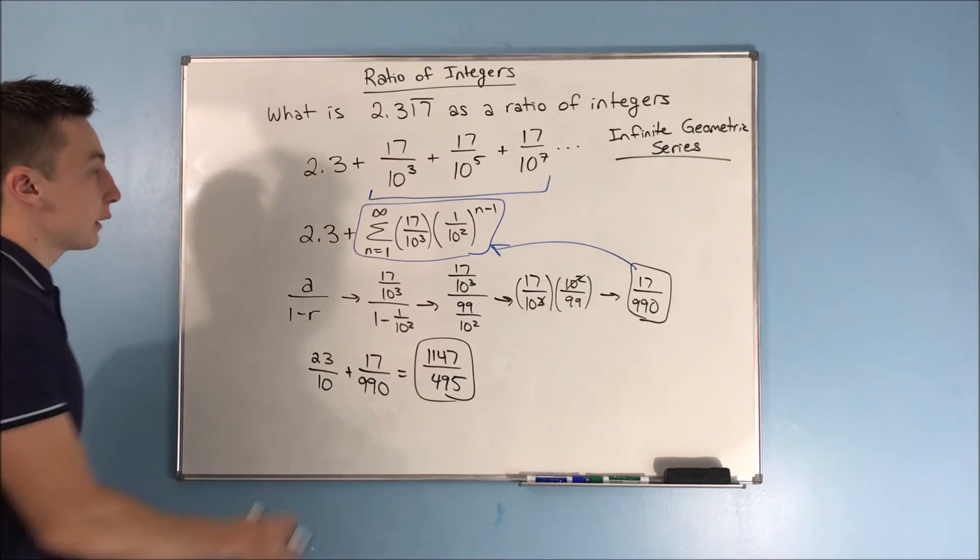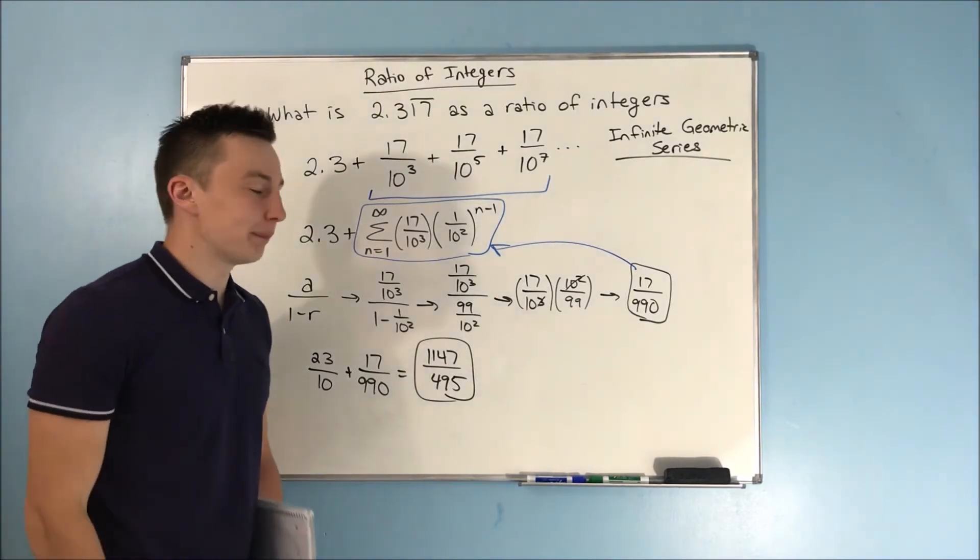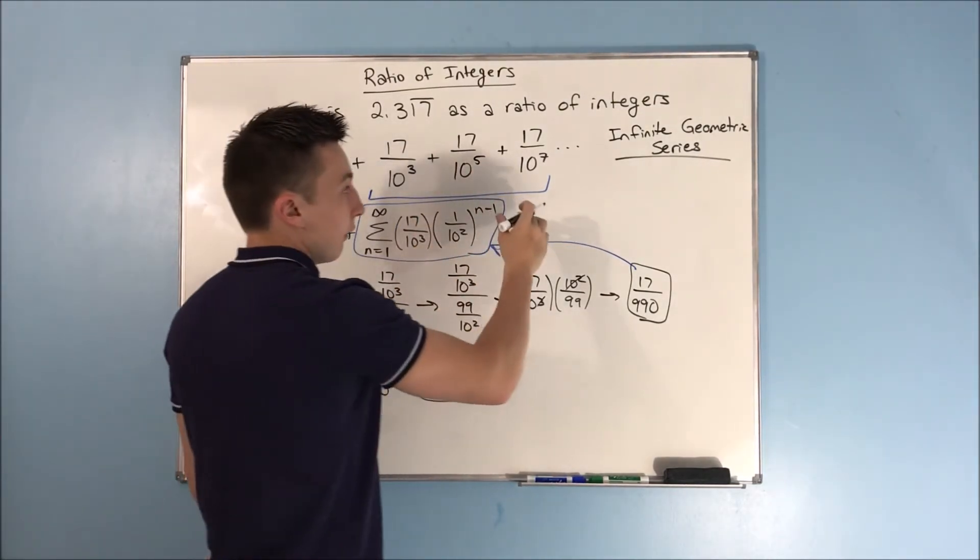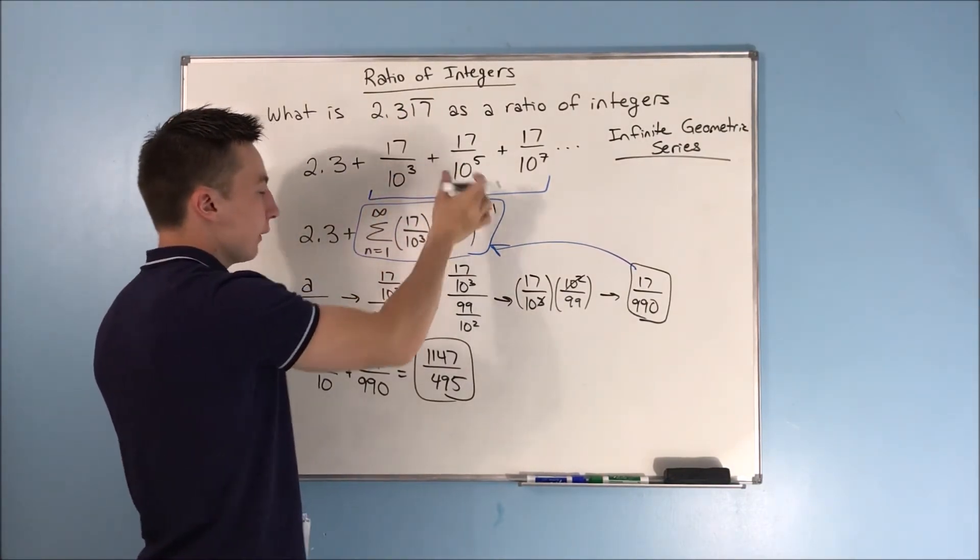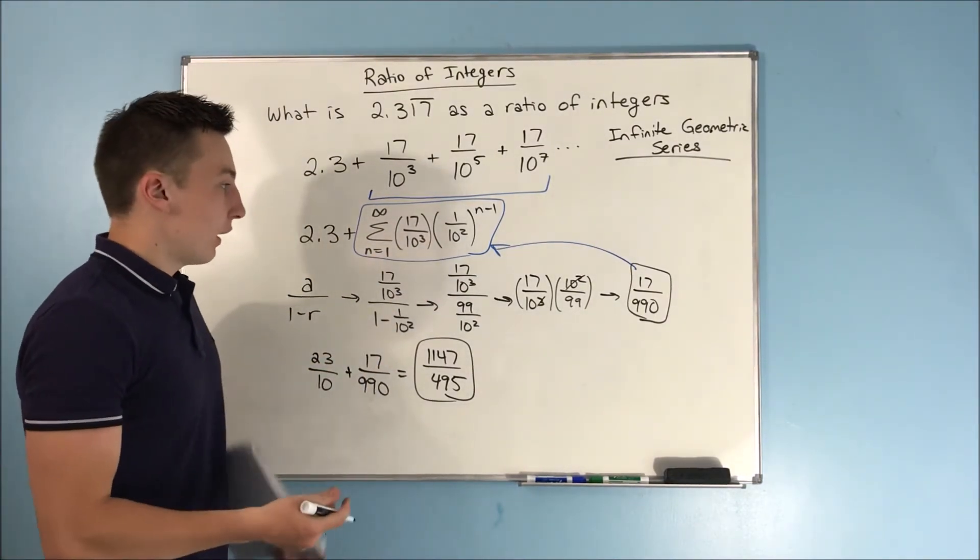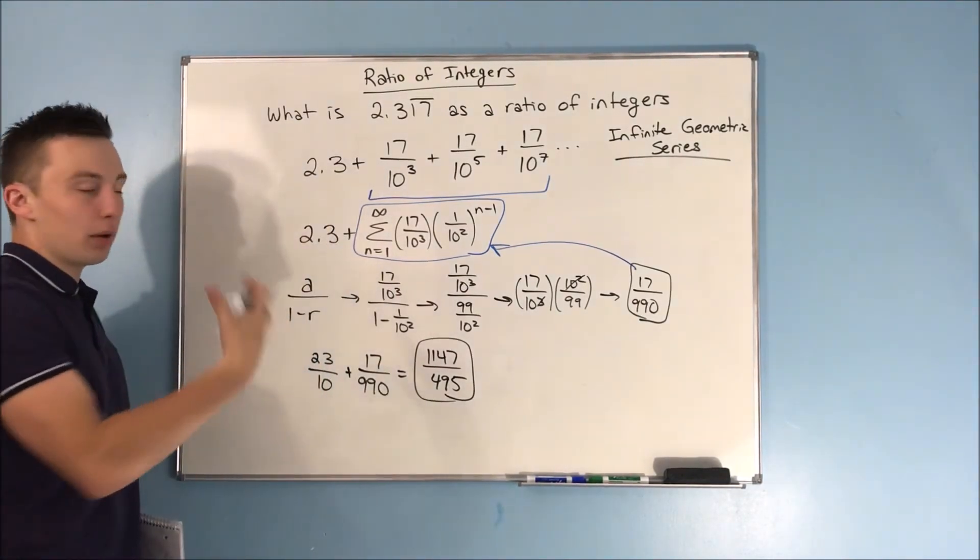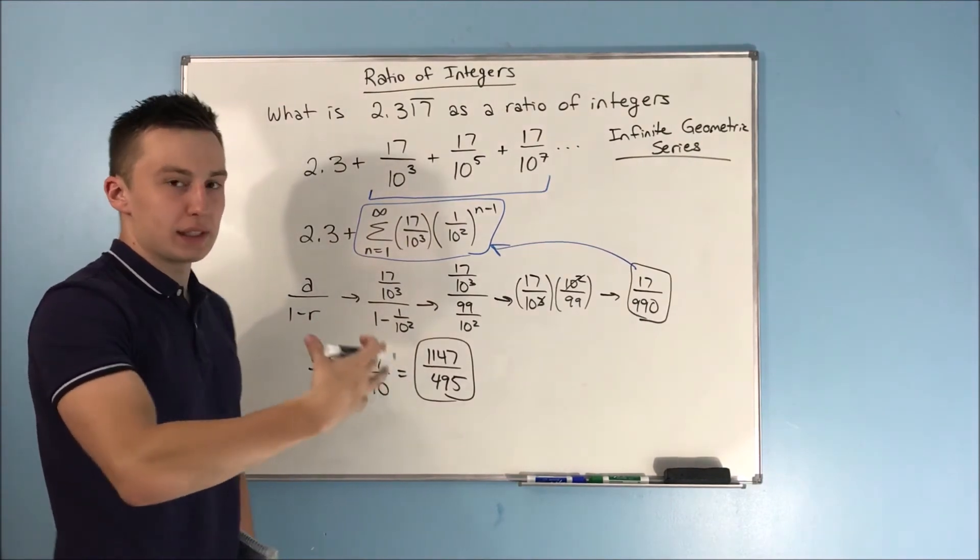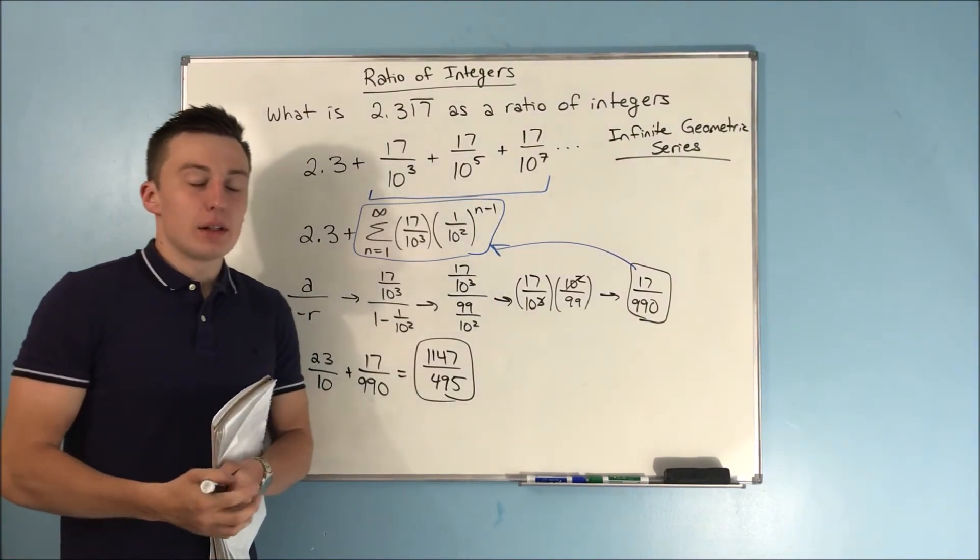So we were able to express this repeating decimal as a ratio of integers, just as a fraction. That's really all this is - it's just setting this up as an infinite geometric series. We set the repeating decimal as an infinite geometric series, put it into that a times r^(n-1) form, and then found the sum. We added it to our 2.3 because that was not part of our infinite geometric series. The infinite geometric series is only the part that's repeating, and we got our ratio of integers.